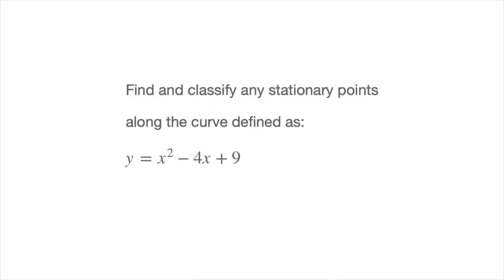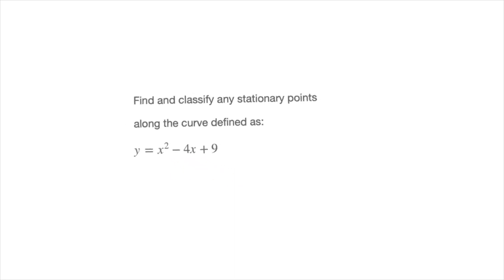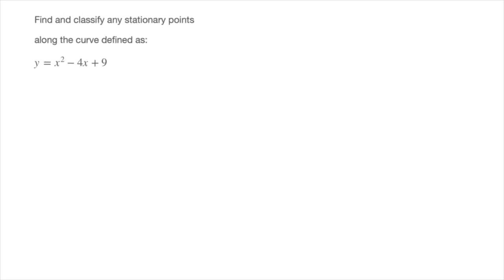Now this tutorial comes in several parts, and in each part we work through an example, the first of which is shown here. We're asked to find and classify any stationary points along the curve defined as y equals x squared minus 4x plus 9. To do that, let me start by moving the question to the side.